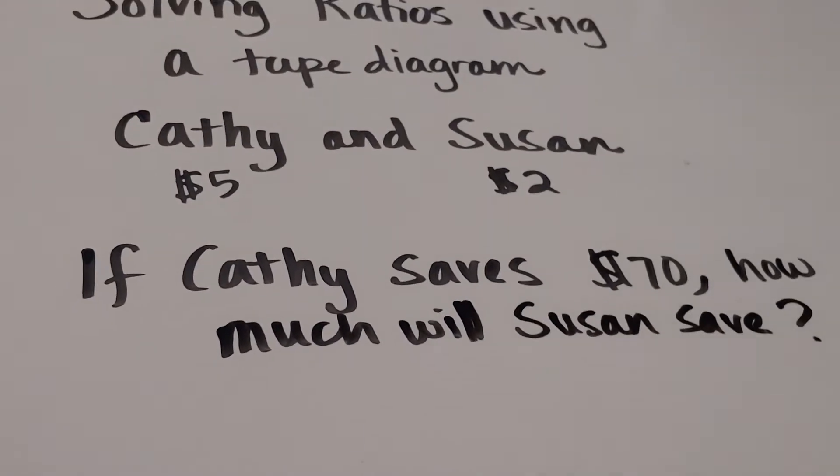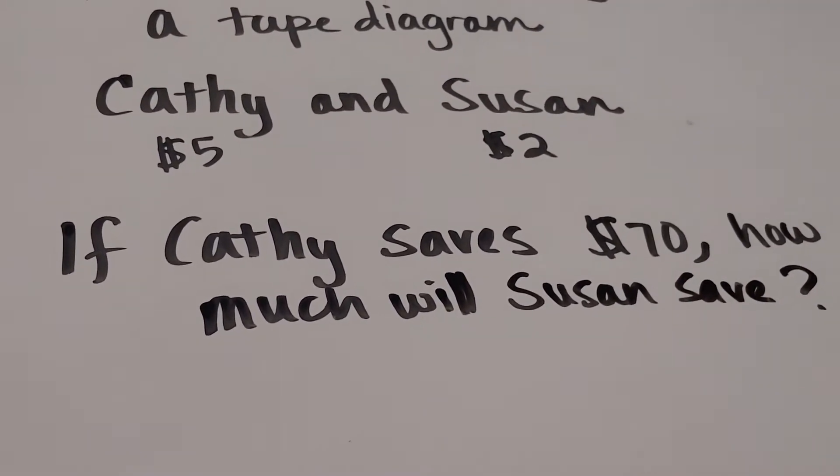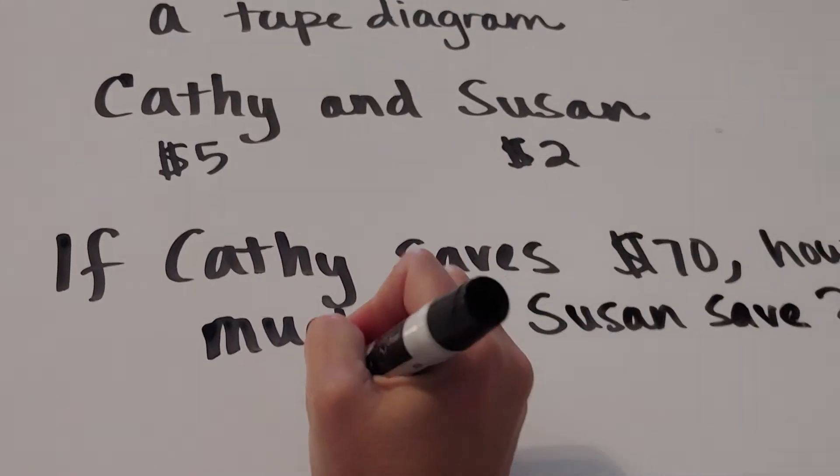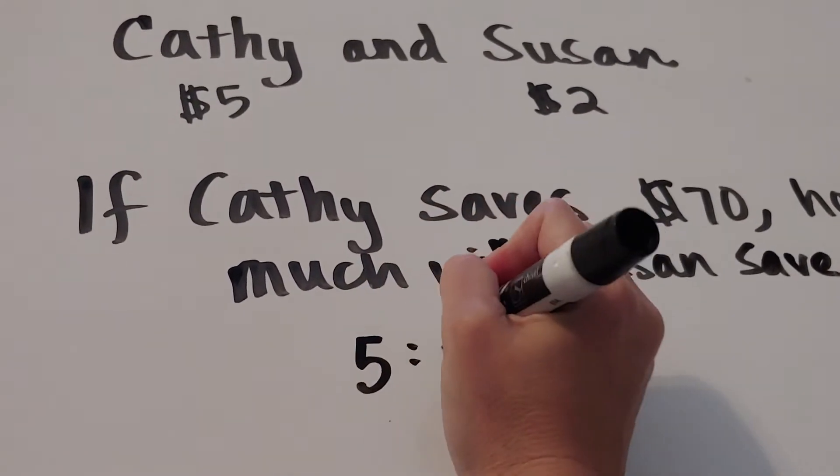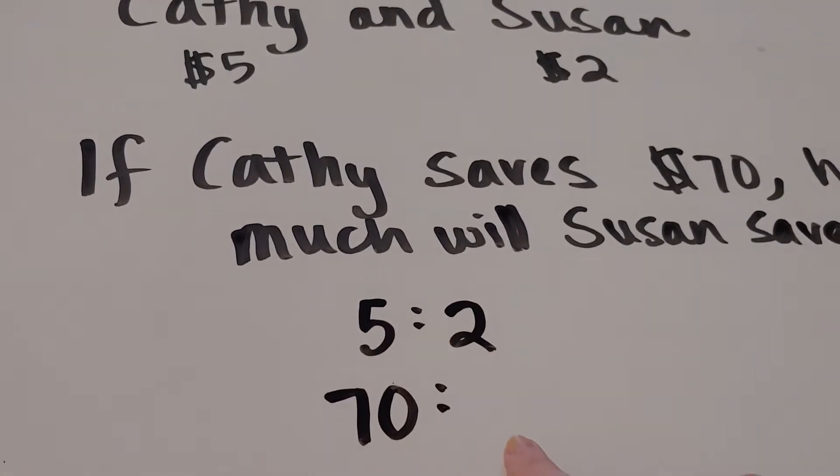Now of course we will have already been talking about ratios. So our ratio is five to two. I'm saying that Kathy now is at 70, so what would this side be?